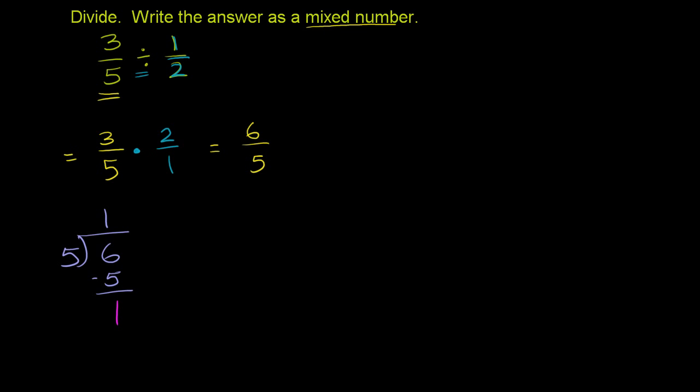So 6 over 5 is equal to 1 whole, or 5 fifths, and 1 over 5. And 1 and 1 fifths. This one comes from whatever is left over. And now we're done. 3 fifths divided by 1 half is 1 and 1 fifth.